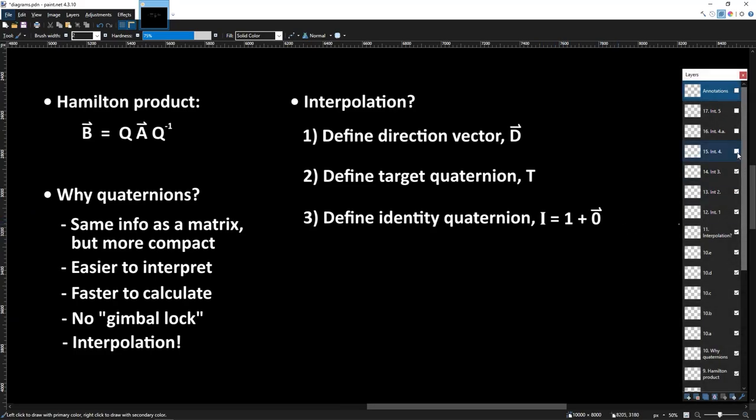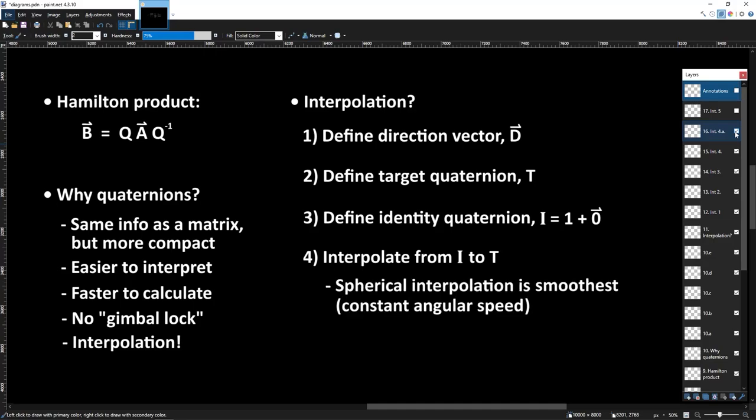Fourthly, we interpolate between the identity quaternion and our target quaternion T. This gives us a bunch of in-between quaternions that smoothly transition between the two. Now the two main methods of interpolation are called linear and spherical. And while linear is technically easier to compute, it also has some technical issues that make it less favorable than spherical. But more importantly, linear interpolation doesn't produce a rotation at constant speed, meaning the animation can end up looking jerky instead of smooth. It's for this reason that spherical interpolation is most commonly used.